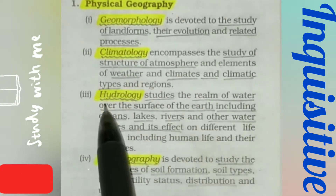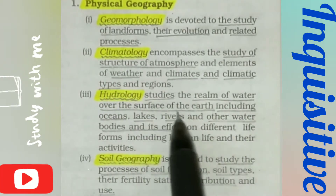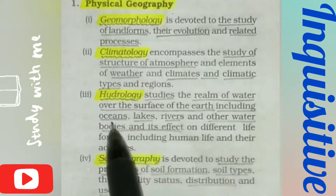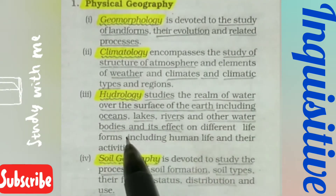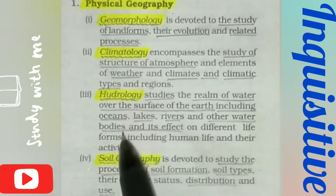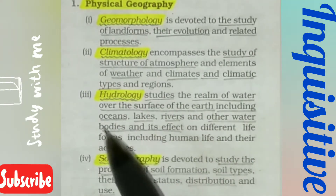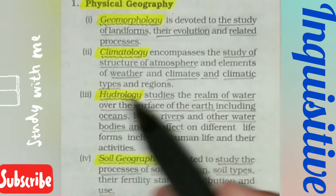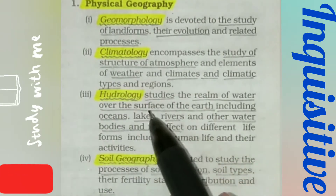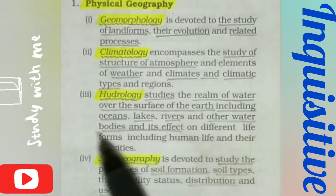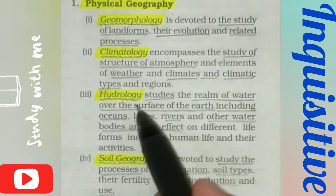Next is hydrology. Hydrology is the study of the realm of water over the surface of the earth, which includes ocean water, lakes, rivers, and other water bodies. It also examines the effects of these on humans — oceans, rivers, lakes — and how they affect human life. All of this is studied in hydrology.